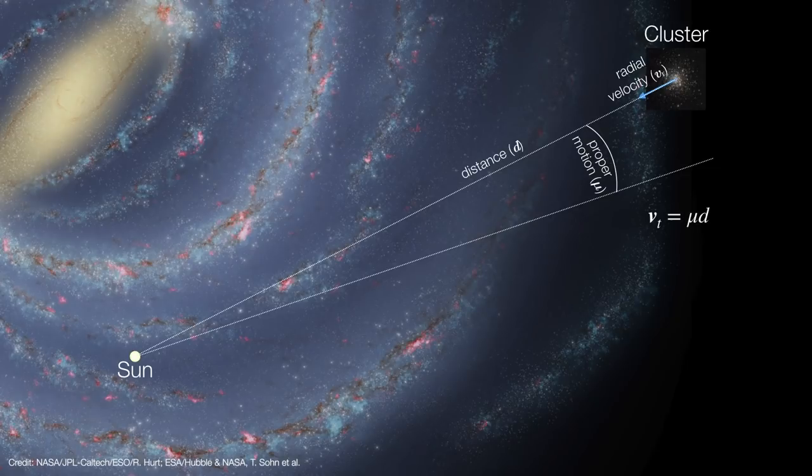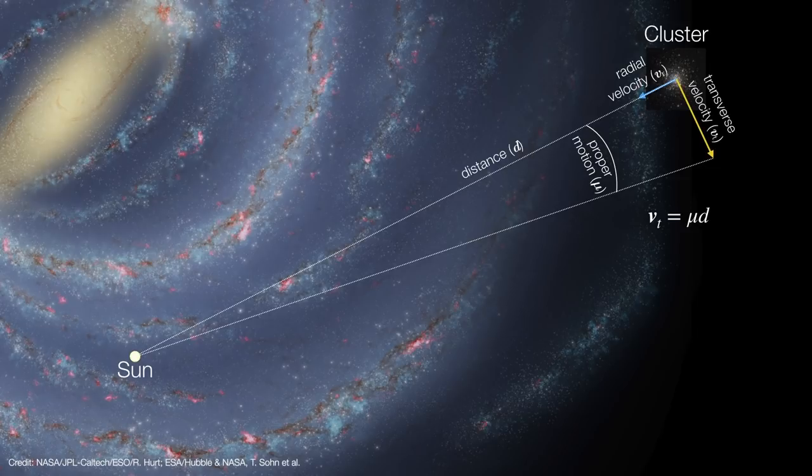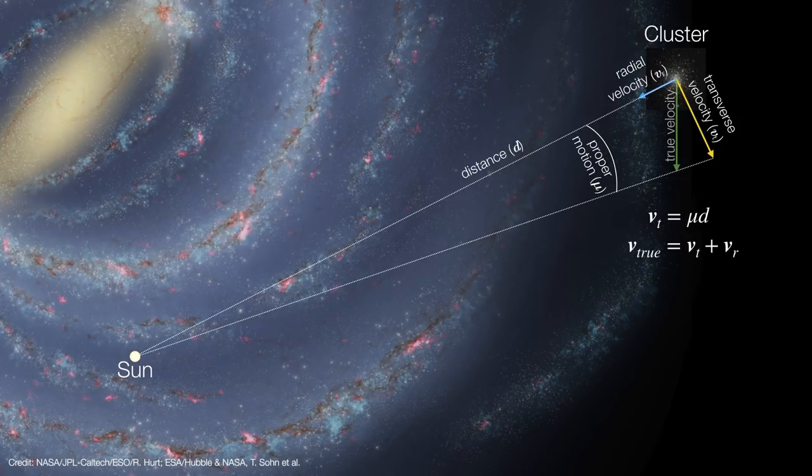With the proper motion and distance, we can then work out the cluster's actual sideways velocity or transverse velocity. Then we can use the transverse and radial velocities to work out the cluster's true velocity in space.